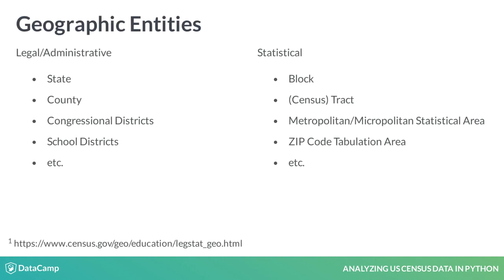The Bureau reports summary statistics for both legal and statistical geographies. Legal administrative geographies are those that exist as legally defined entities, such as states or counties. Statistical geographies, which include census tracts, are created by the Census Bureau for the purposes of statistical reporting. Zip Code Tabulation Area, or ZCTA, is a statistical equivalent to the postal zip codes.